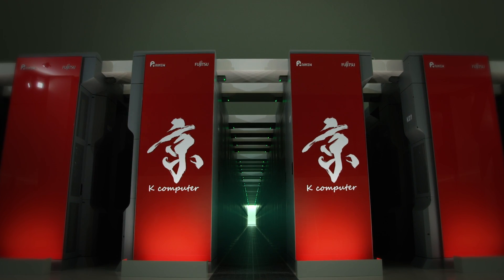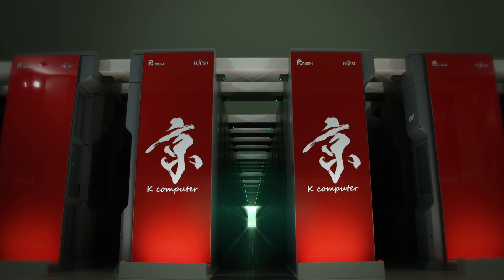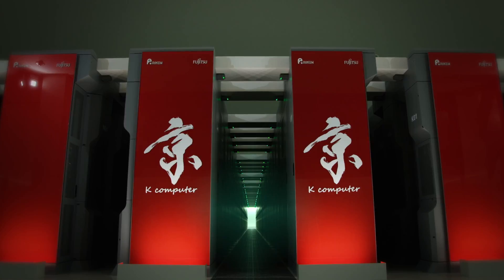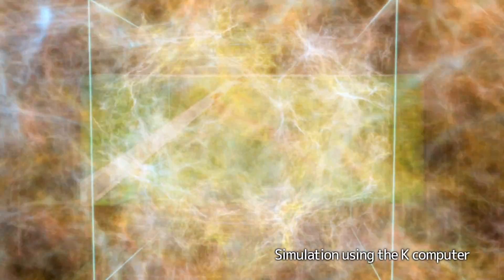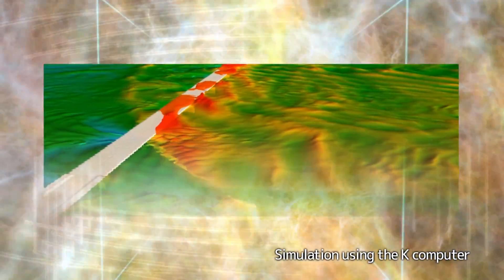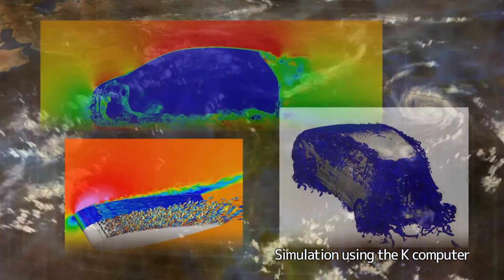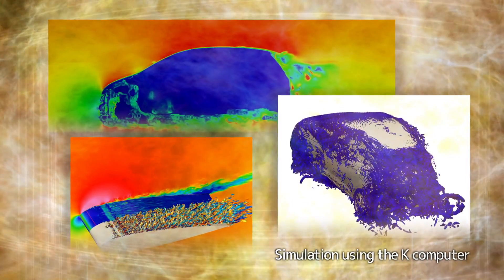The K computer is one of the world's most powerful supercomputers. It is helping us to better understand the structure of the universe and the motions of the oceans and atmosphere. It is also contributing to improving manufacturing technology.